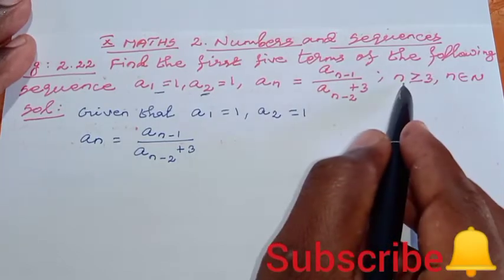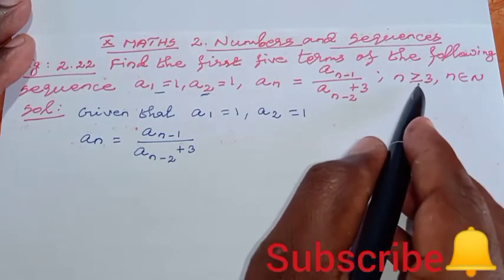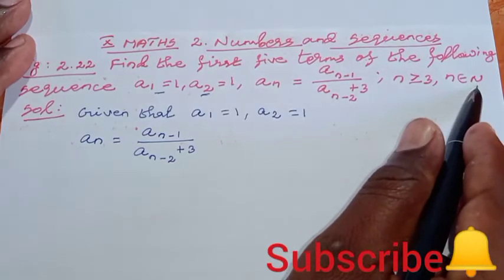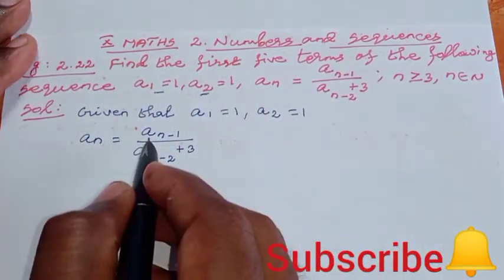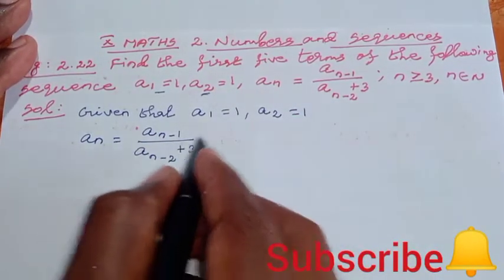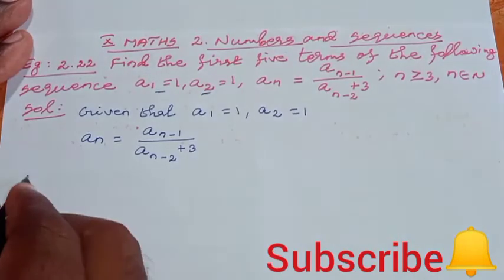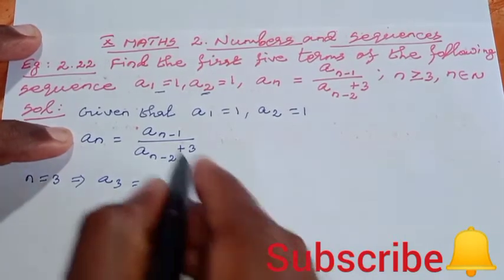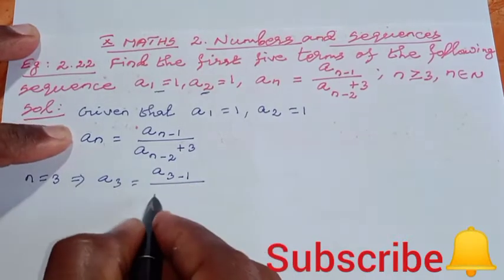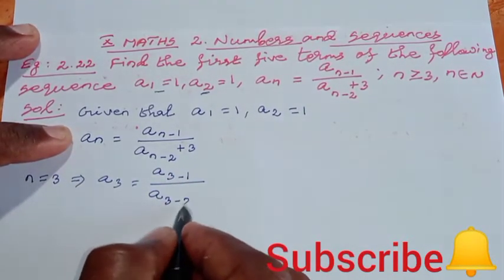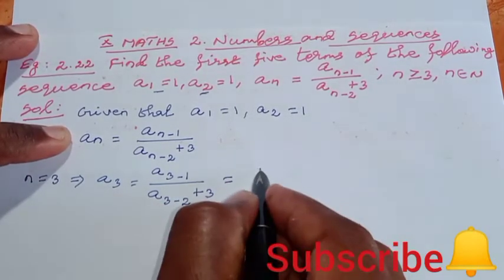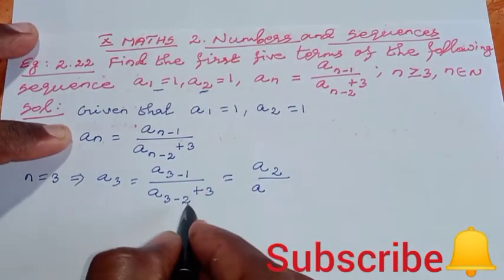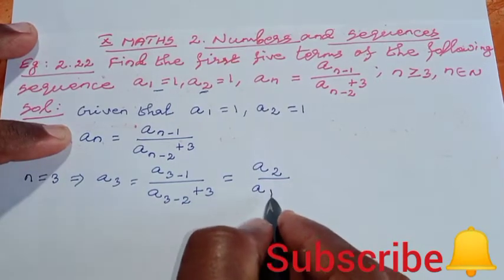If we find the third term, n = 3, which implies a₃ = (a₃₋₁)/(a₃₋₂ + 3) = a₂/(a₁ + 3). Here, a₂ = 1, so a₂/(a₃₋₂), 3 minus 2 is 1, plus 3.